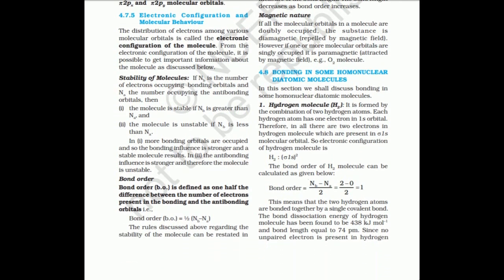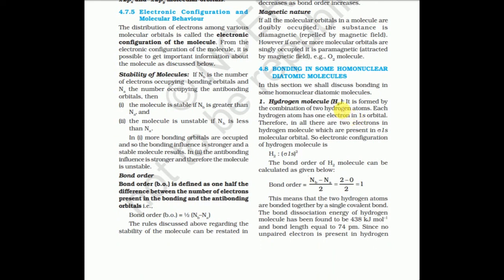First example: H2 molecule. H2 has two electrons. The molecular orbital configuration is sigma 1s². The bond order is ½ × (nb − na) = ½ × (2 − 0) = 1. H2 is a stable molecule with a bond order of 1, meaning a single bond. All electrons are paired, so it is diamagnetic.